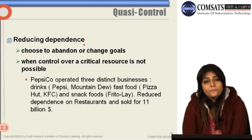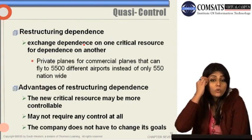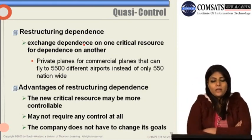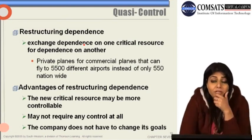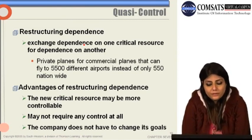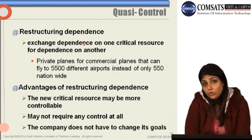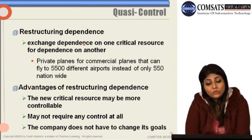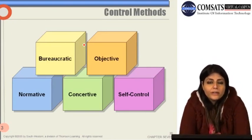Another option when control is difficult is to restructure your dependence — exchanging dependence on one critical resource for dependence on another. For example, private planes can fly to 5,500 different airports instead of only 550 nationwide airports accessible by commercial planes. The new critical resource may be more controllable, may not require any control at all, and the company may not need to change its goals — unlike when reducing dependence.